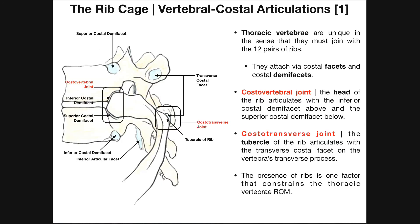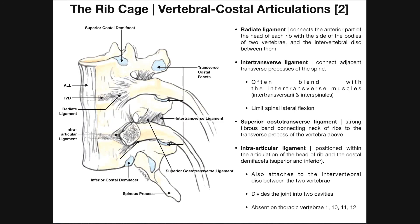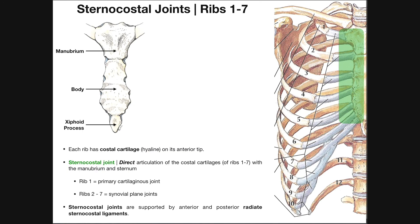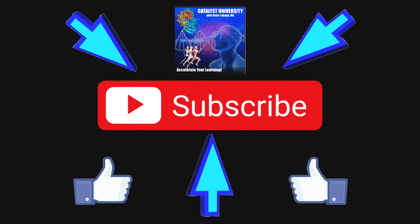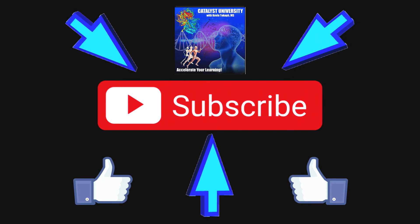Hopefully this video gave you a good understanding of the general joints between the ribs and the vertebra. In the next video, we'll talk in detail about the ligaments that stabilize these joints, and after that, we'll go into the joints that ribs have with the sternum. Please make sure to like this video and subscribe to my channel for future videos and notifications. Thank you.